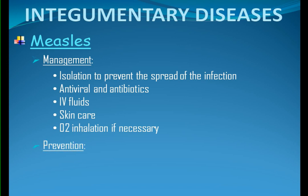Prevention: anti-measles vaccine. It is given at 9 to 11 months, then MMR — the measles, mumps, rubella vaccine — at 12 to 15 months as the second dose.